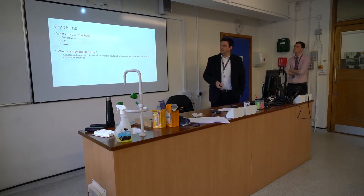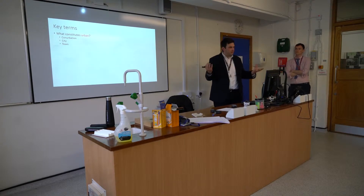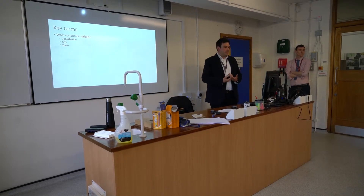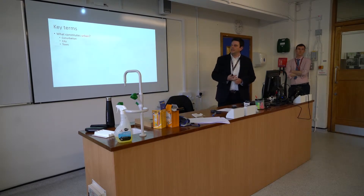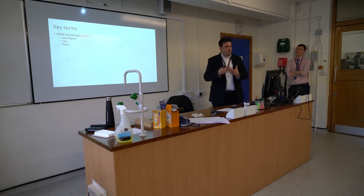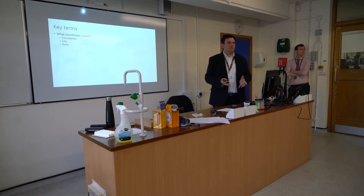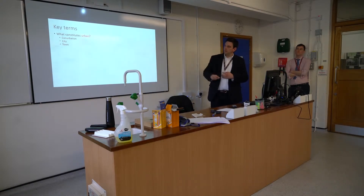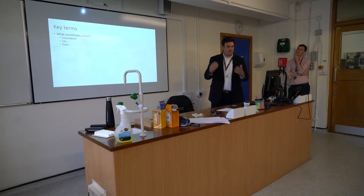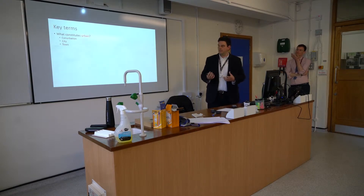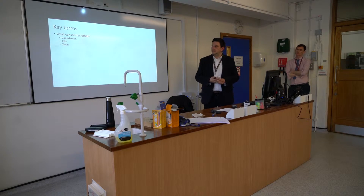Just to give you some background on the broad definitions of what constitutes urban and what constitutes rural — it's quite hard to define in the UK. The term urban varies through space; in Norway, 200 people is defined as urban, which is not the same in the UK. The census breaks it down into three terms. There's a conurbation, which is a number of cities grouped together — like the Greater Manchester area — that is urban. If it's designated city status, then it's urban, and if it's a town, it's urban.